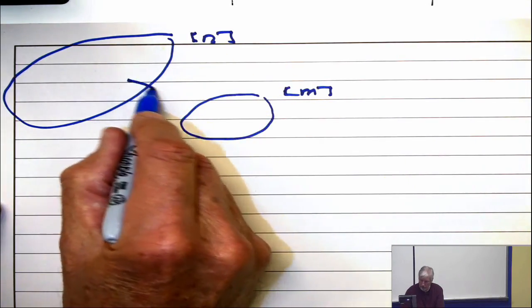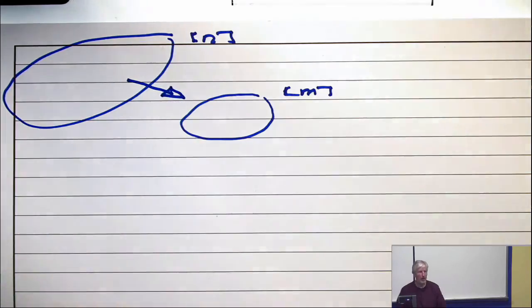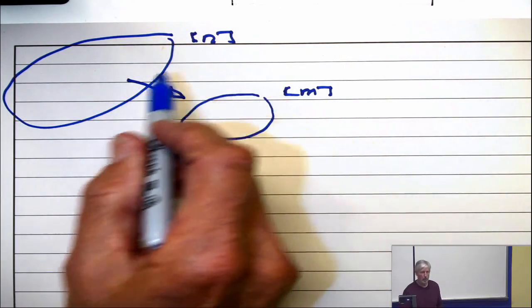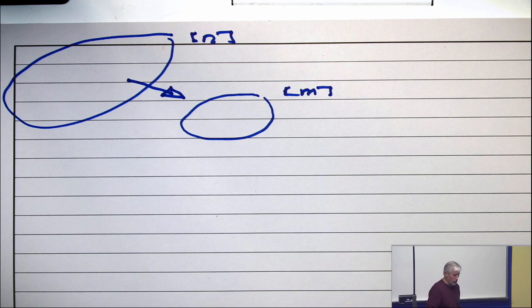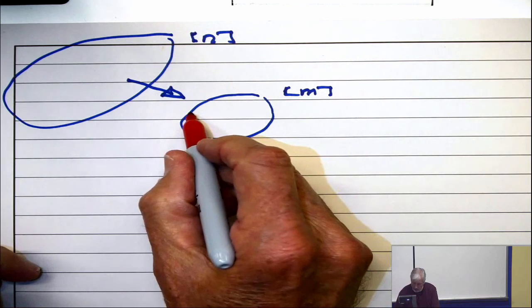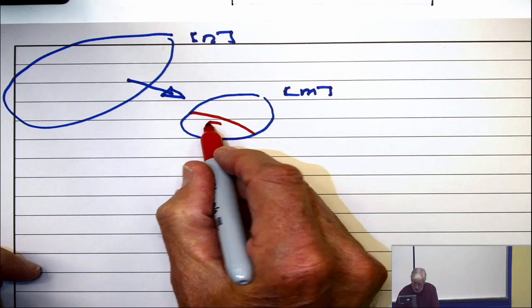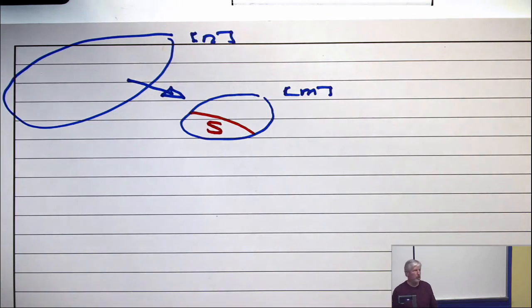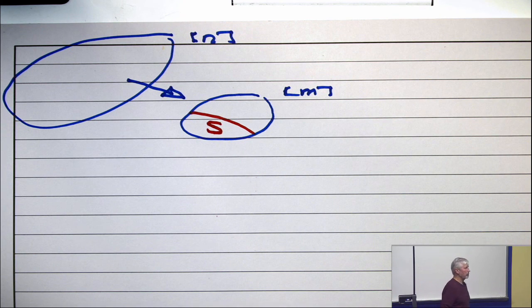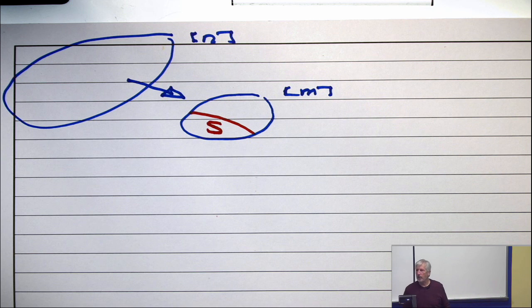And we're going to map this set down to that one, but you got to use up all of these. So what are we going to do? We're going to take a subset, and here's your subset. And you're going to say that a function satisfies those properties when those elements are not in the domain.